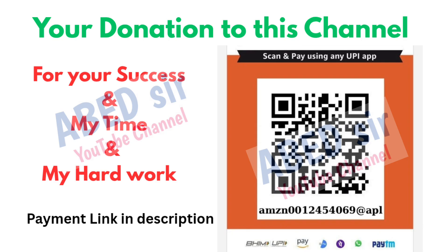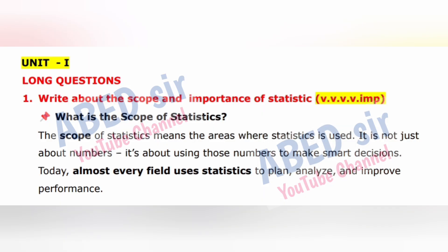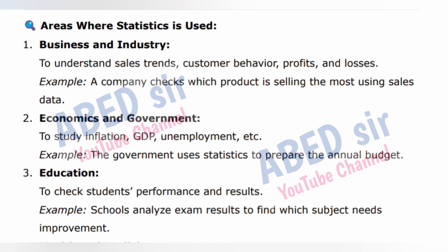Next, Unit 1 long questions. First important long question: Write about the scope and importance of statistics. The scope of statistics means the areas where statistics is used. It is not just about numbers — it's about using those numbers to make smart decisions. Today, almost every field uses statistics to plan, analyze, and improve performance. Area 1: Business and industry — to understand sales trends, customer behavior, profits, and losses. Example: A company checks which product is selling the most using sales data.